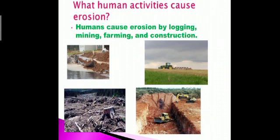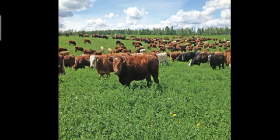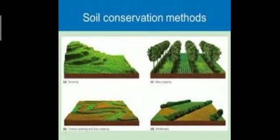Next is overgrazing. Overgrazing means when cattle are left in fields for grazing. When land is overgrazed, its top soil is removed. This is also a main cause of soil erosion.